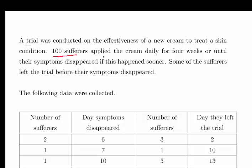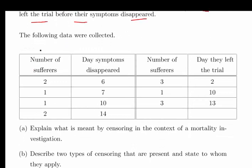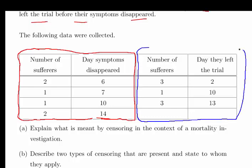We have 100 sufferers applied the cream daily for 4 weeks or until their symptoms disappeared, if this happened sooner. And some of the sufferers left the trial before their symptoms disappeared, censoring in other words. So what we have here, we have the table broken down. This is one set of people and this is another set of people. This is the people that the treatment was successful for. And this is essentially the censored data.